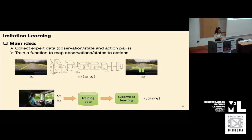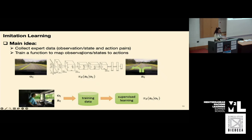Here is an example from autonomous driving: we collect data from sensors — here, a camera — and also the driving actions from the steering wheel with encoders. We then train a neural network by doing supervised learning to match the actions of the expert, basically the driver.